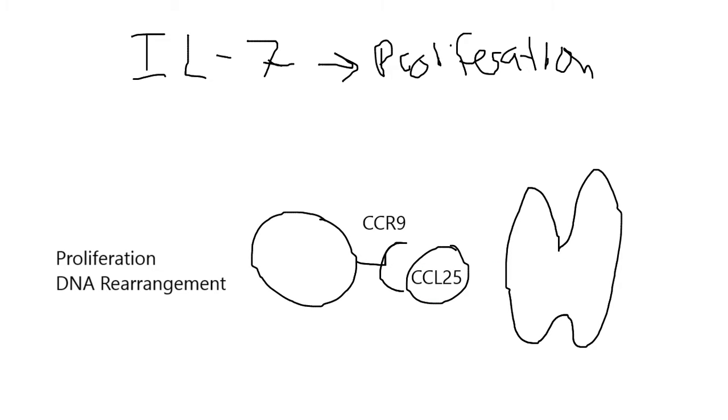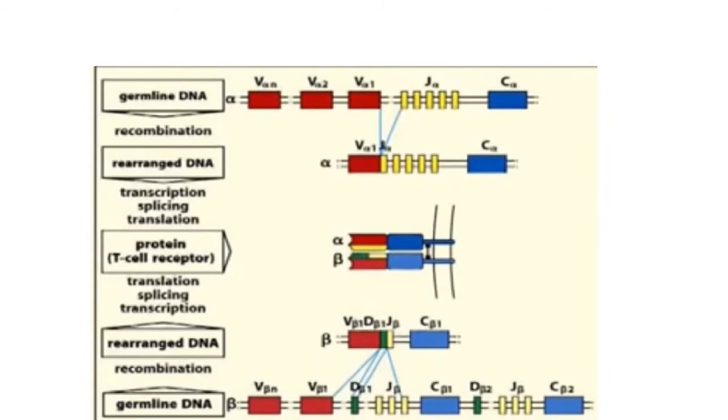And two steps remain. Well, not two steps. The next two steps, the T cell is going to proliferate. And it's going to start rearranging its DNA. Let's go ahead and take a look at the DNA rearrangement.